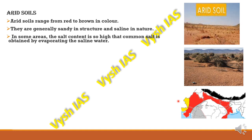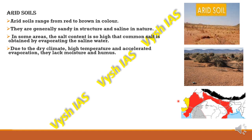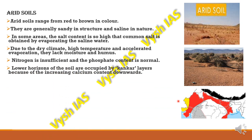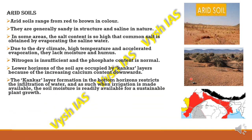In some areas, the salt content is so high that common salt can be extracted by evaporating the saline water. Due to dry climate, high temperature, and accelerated evaporation, they lack moisture and humus content. Nitrogen is insufficient and phosphate content is normal. The lower horizons are occupied by kankar layers due to increasing calcium content downwards. The kankar layer restricts infiltration of water, but when irrigation is available, soil moisture supports sustainable plant growth.